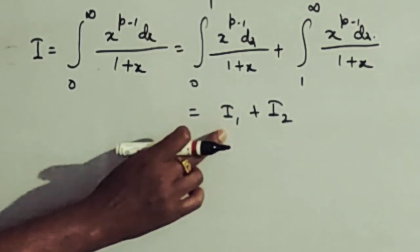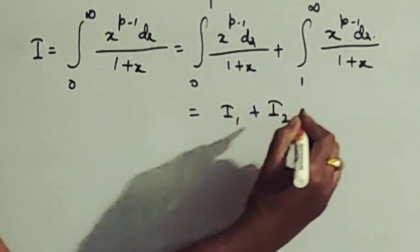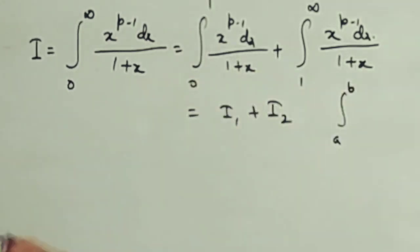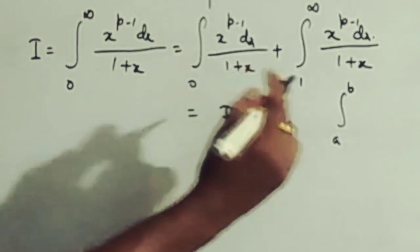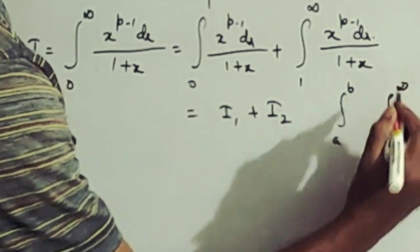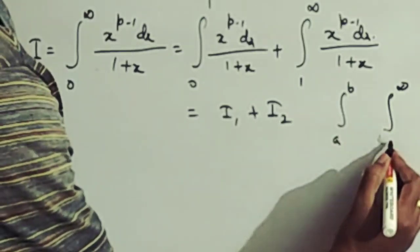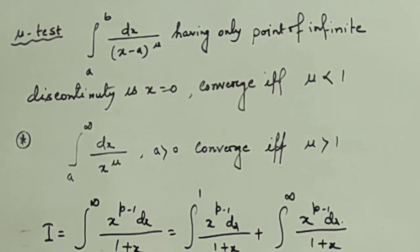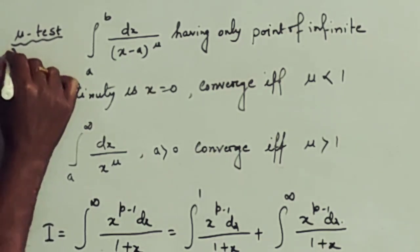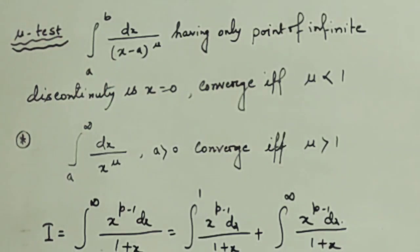I1 is of the form integration a to b (finite interval), and I2 is of the form integration b to infinity (infinite interval). We will use four tests in total. Let us discuss the four tests one by one. The first test is the mu test.